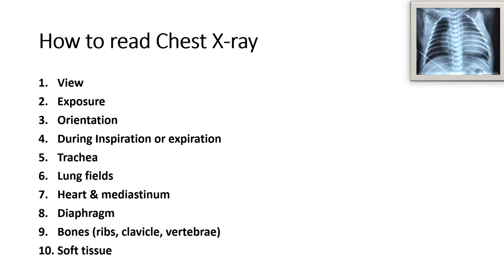So how to read the chest X-ray? There are 10 points you have to remember whenever you are reading the chest X-ray. First, look at the view; then check if exposure is proper or not; then the orientation; then whether the film was taken during inspiration or expiration; then in soft tissue start from the trachea; then lung fields; then heart, mediastinum, sternum; then diaphragm; and then bones and soft tissues. This is the sequence to read the chest X-ray.